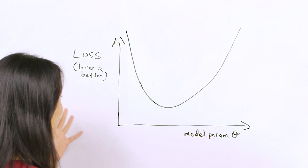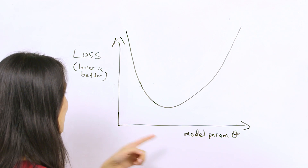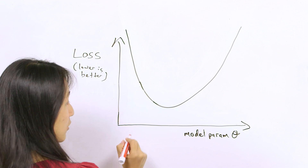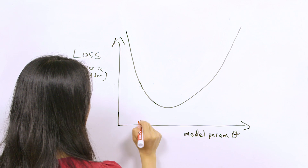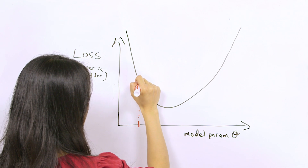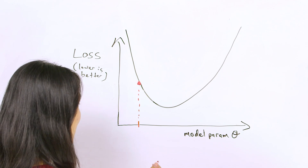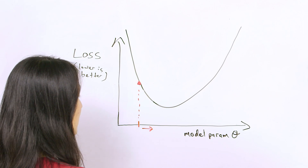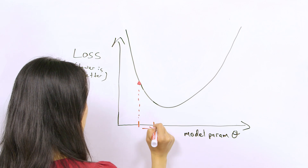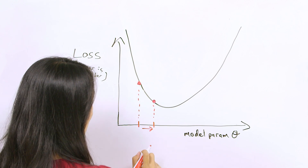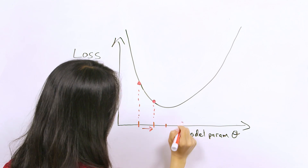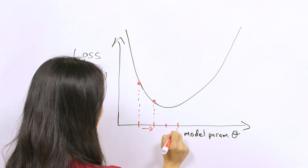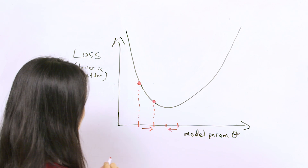Pretend in one dimension, this is our loss function that maps our single model parameter theta to the loss. If we start off at a random value or initialization for theta, then we achieve the corresponding loss. We can then compute the negative gradient, which tells us in which direction we should go in order to minimize the loss. If we take a gradient step in that direction, we get a new loss. We can keep taking gradient steps until we reach a point where we have passed the local minimum, in which the negative gradient will tell us to go back in the direction that we came from.